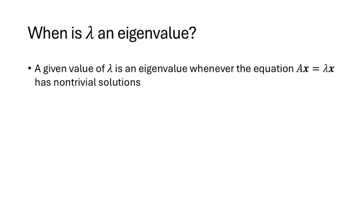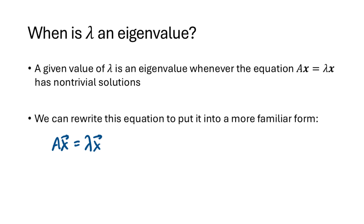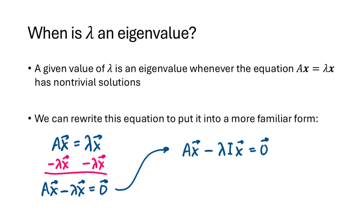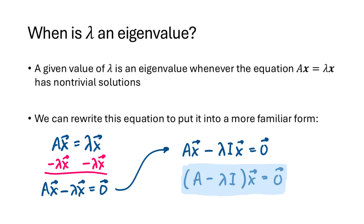How do we test whether a given value is an eigenvalue? Lambda is an eigenvalue for A whenever the equation Ax equals lambda x has non-trivial solutions. We can rewrite this as Ax minus lambda Ix equals zero, where I is the n by n identity matrix. Now A and lambda I are both matrices, so we can factor out x and get the equation (A minus lambda I) times x equals the zero vector. That's the equation we solve to determine whether lambda is an eigenvalue.